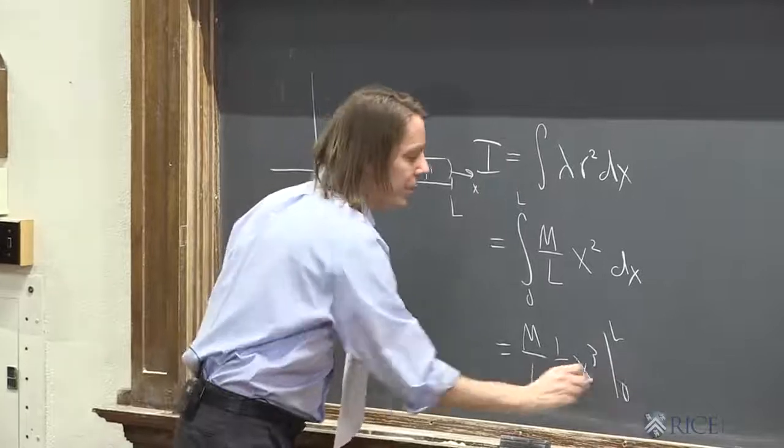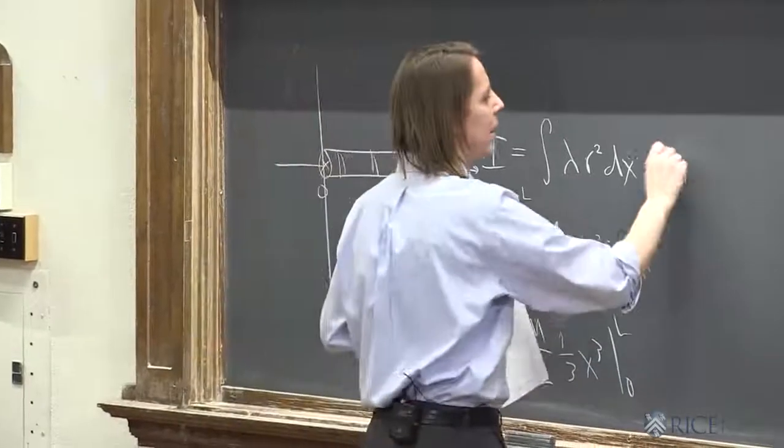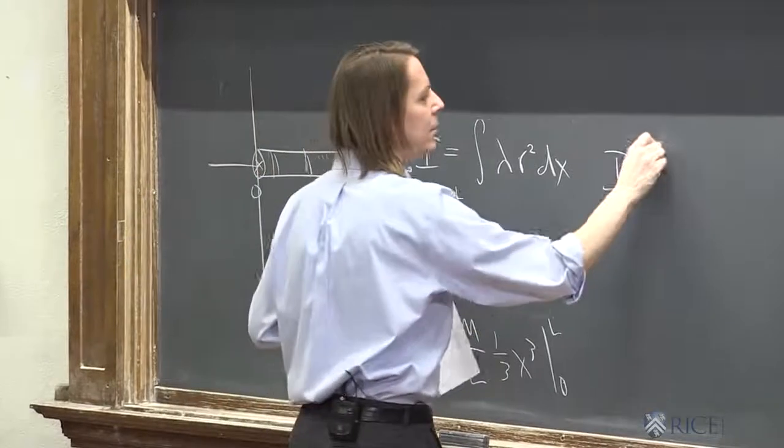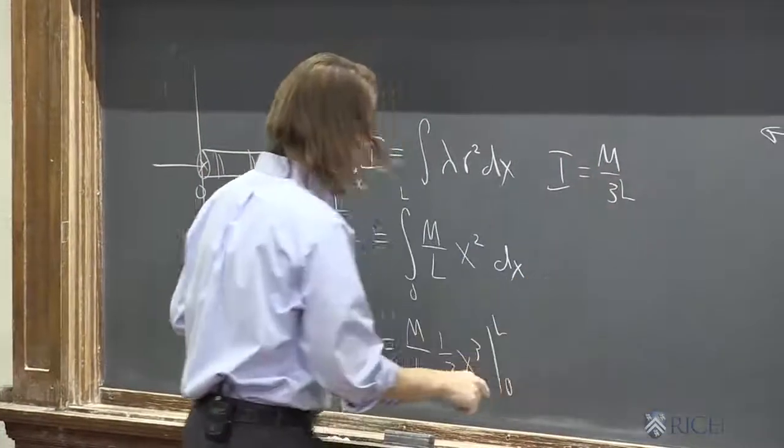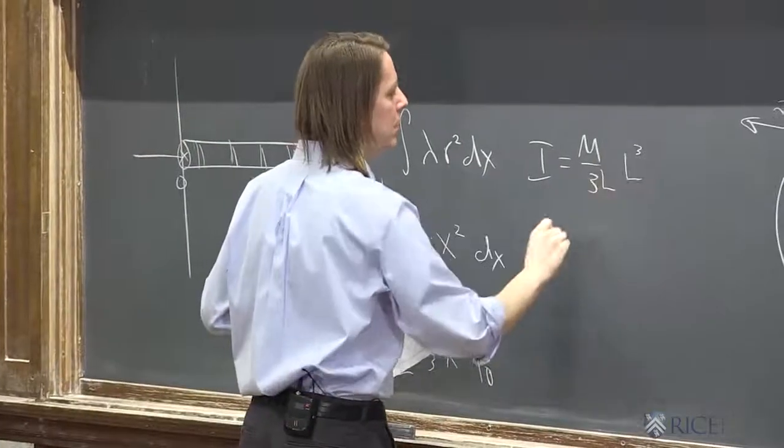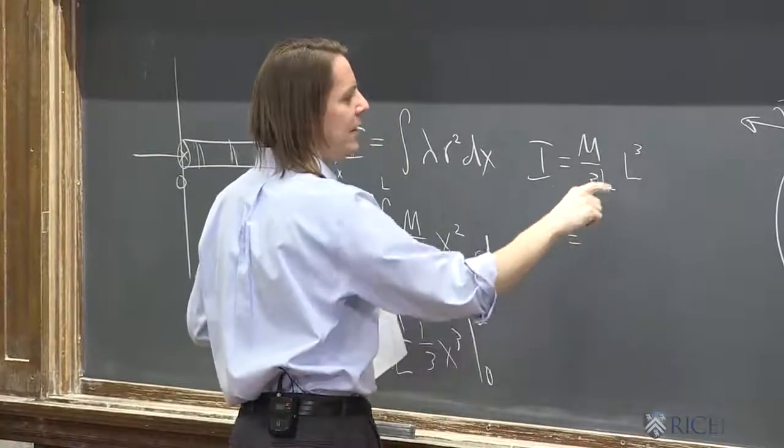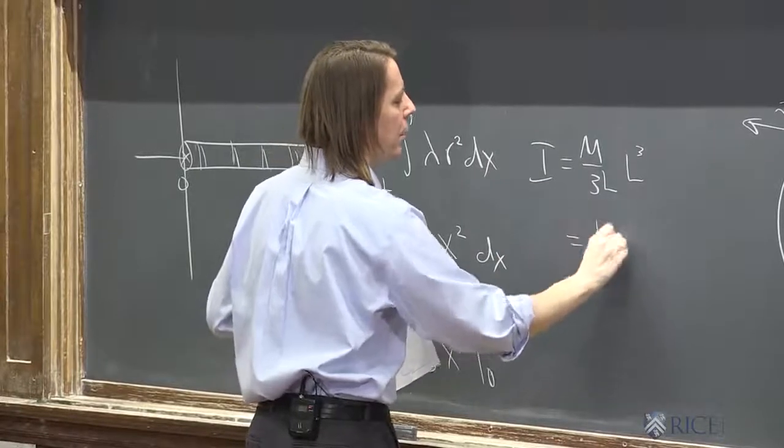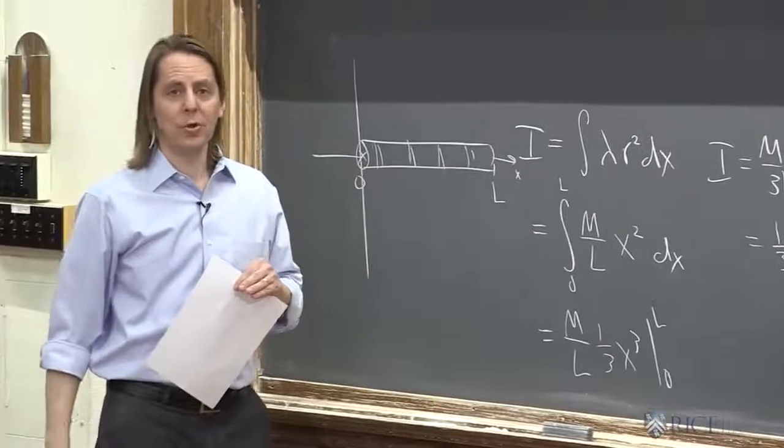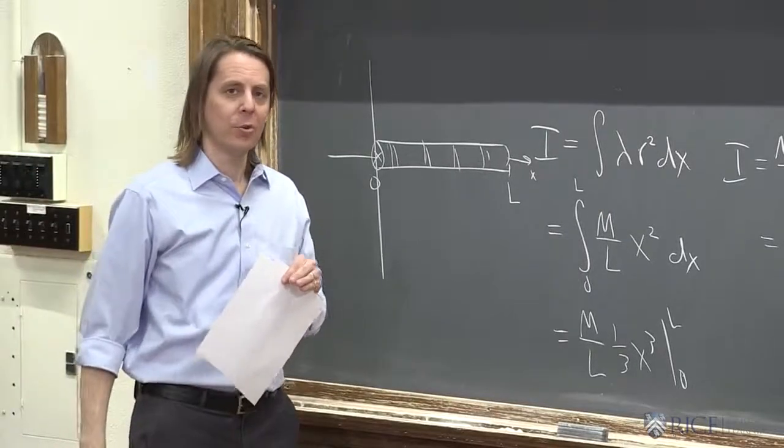Let's see. So this is m over l, x squared is 1 third x cubed, evaluated from 0 to l. So the limits are going to affect the answer. Because we're going to get i equals m over 3l times l cubed minus 0. And what do we get? 1 third ml squared. So a much larger moment. 1 third as opposed to 1 twelfth.